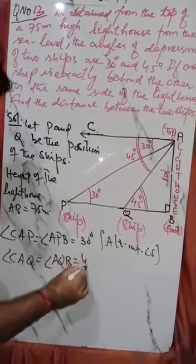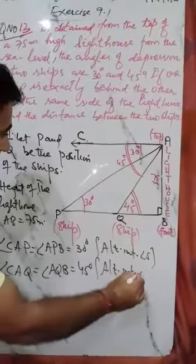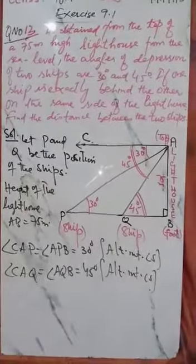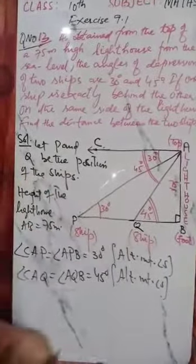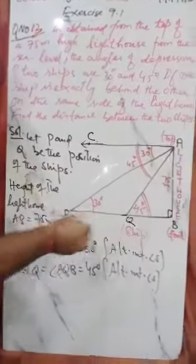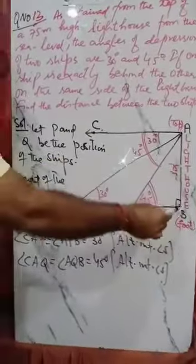Next, angle CAD is equal to angle APB, which is 30 degrees alternate interior angles. And angle CAQ is equal to angle AQB, which is 45 degrees, alternate interior angles. So now we have to find AB and BQ.